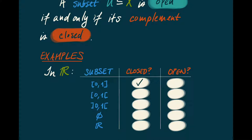Now let's look at the so-called half open interval [0,1), where I'm including 0 but not including 1. The fact that I'm not including 1 is a problem, because when I form the closure I'm going to get 1. So I have a point close to [0,1) that's not in [0,1) — it's not closed. Is it open? It's not open either, because I have a point, namely 0, that is close to the complement but is actually inside my set.